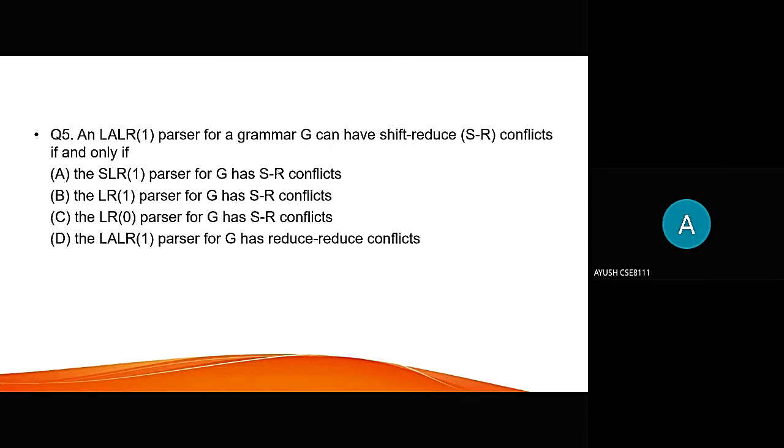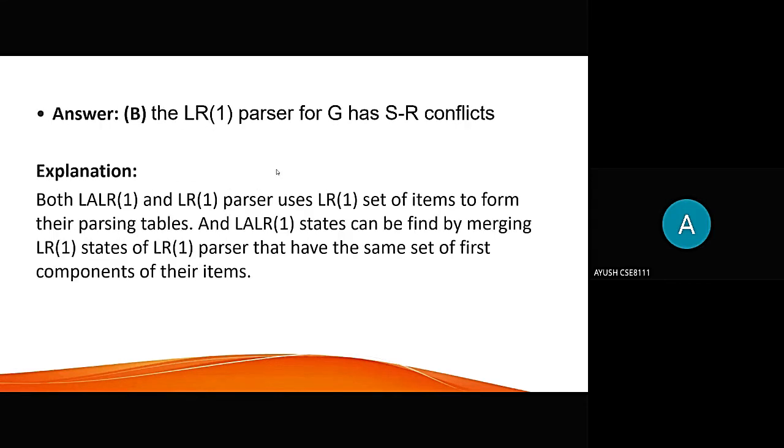LL1 parser of a grammar G can have shift reduce SR conflicts if and only if, the answer is the LR1 parser for G has SR conflict. Because both LALR1 and LR1 parser uses LR1 set of items to form their parsing table and LALR1 state can be found by merging LR1 sets of LR1 parser that have the same set of first component of their items. Thank you.